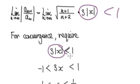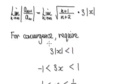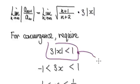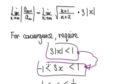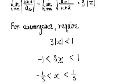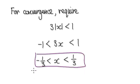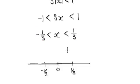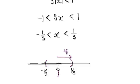We require this to be less than 1. When you're here, you can interpret this as this. Now divide everything by 3. That will then give you this. So what you've got so far is: for convergence, anything in this interval here. The radius of convergence is 1/3 and is centered at 0.